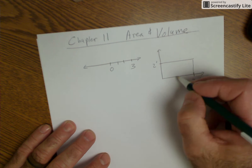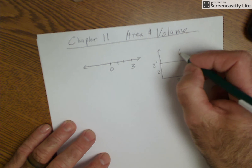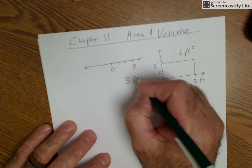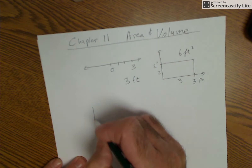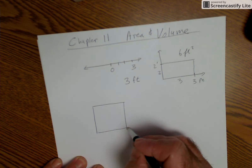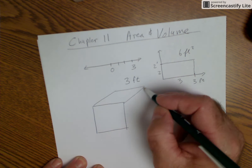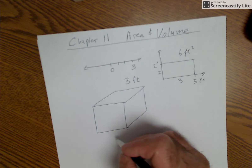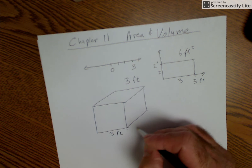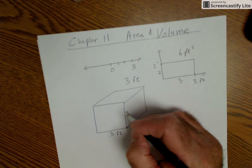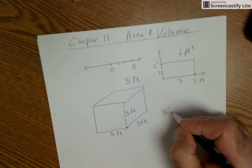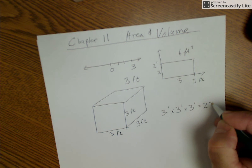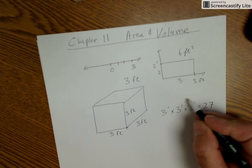In 2D space, you multiply the base times the height and get six square feet. So one-dimensional, you're just going to have feet. Two-dimensional space, you'll have square feet. And then in three-dimensional space, you have base times height times depth, which is volume — cubic feet. Say this is three feet by three feet by three feet: three feet times three feet is nine, times three feet is 27 cubic feet.